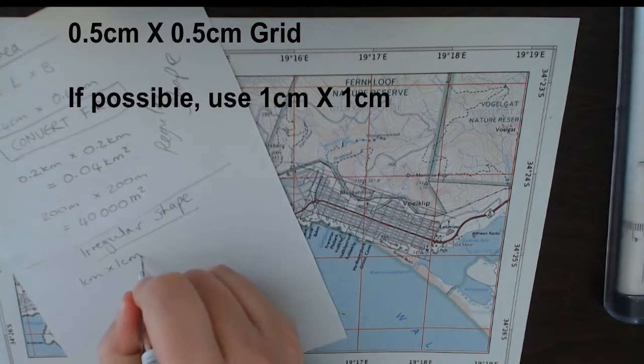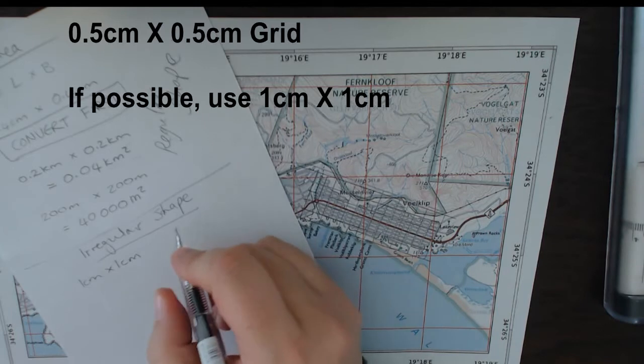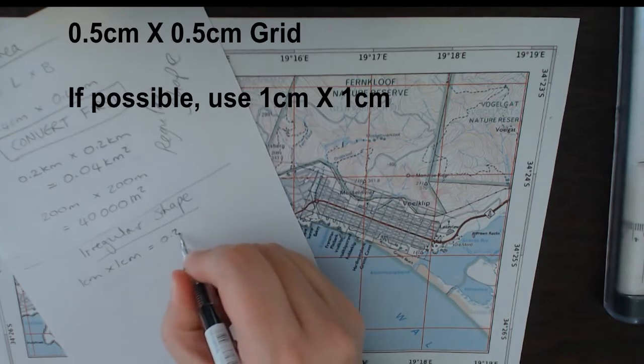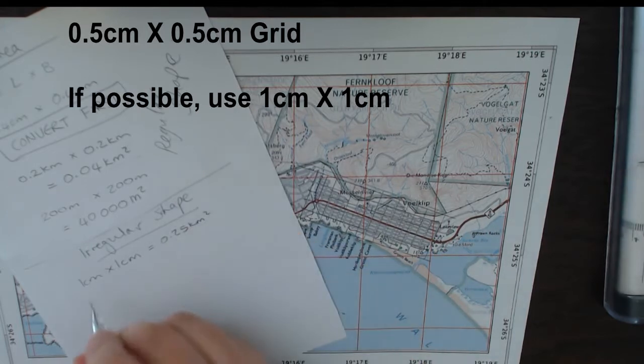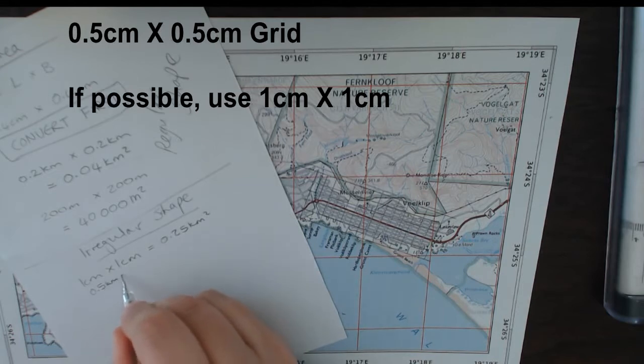Usually when you do this kind of irregular shape measurement you would go one centimeter by one centimeter, and then when you convert that, you're going to convert it first into kilometers. So that's going to give us 0.25 square kilometers eventually, but 0.5 kilometers times by 0.5 kilometers is going to give us 0.25 square kilometers, right?